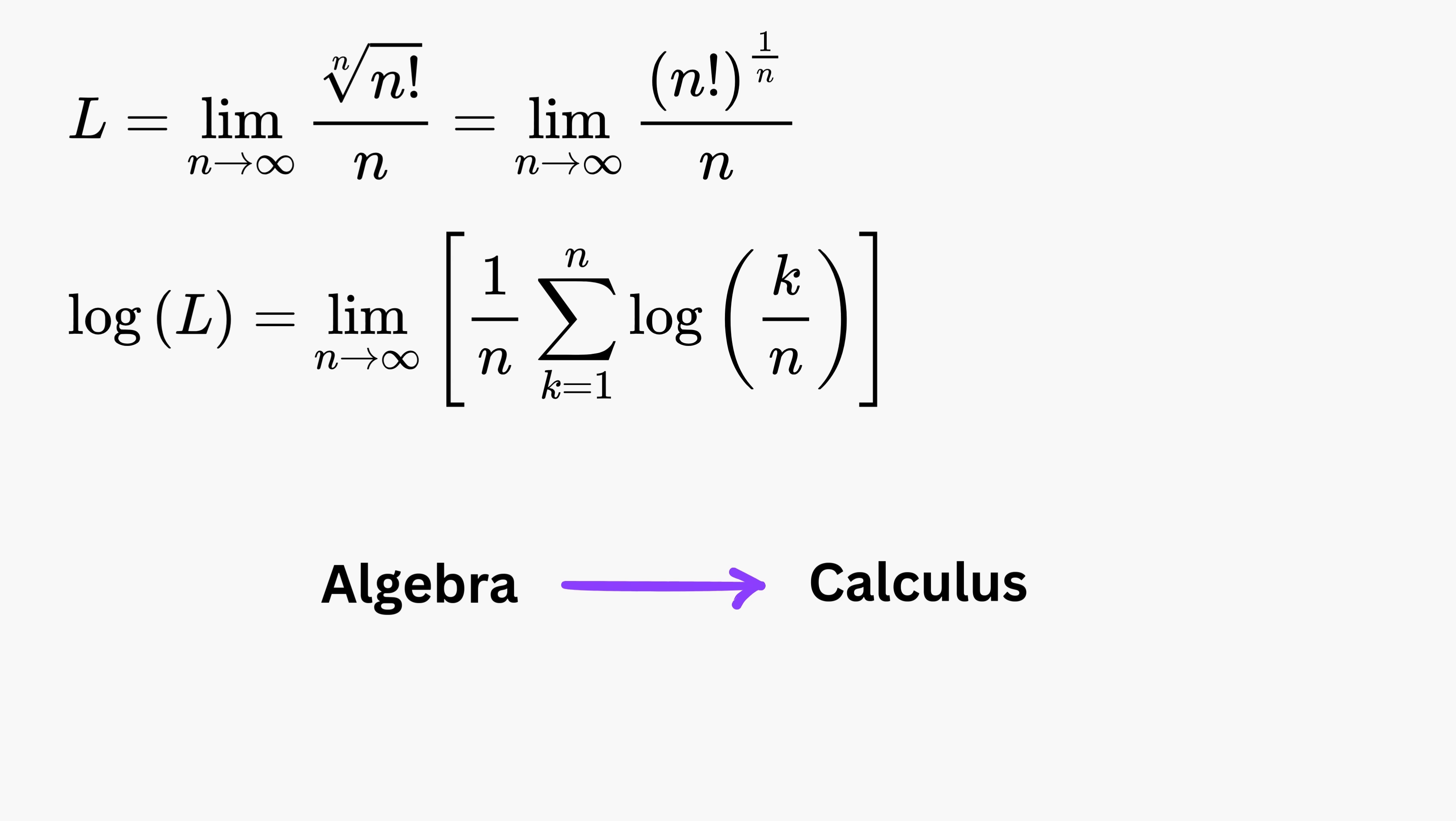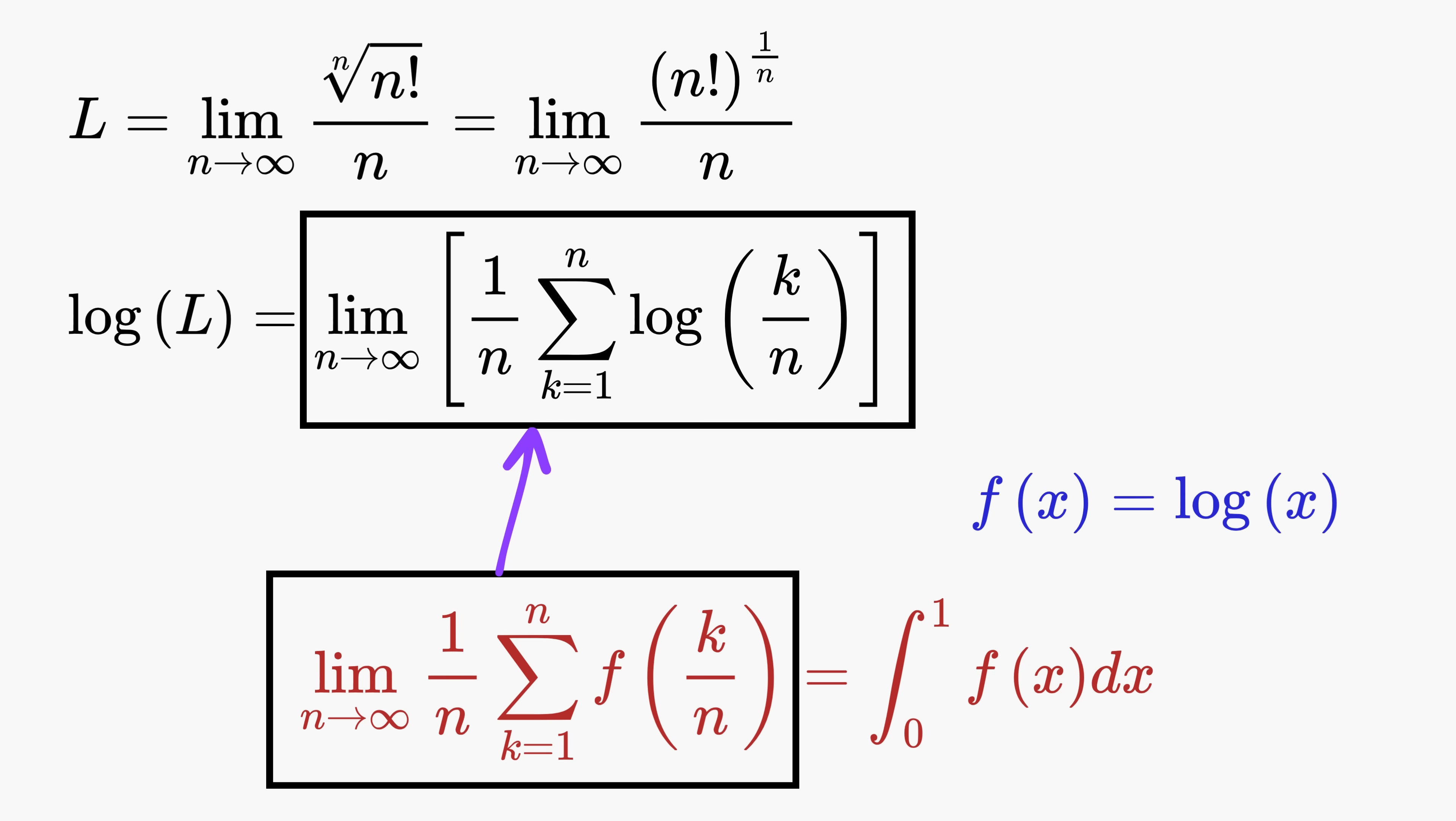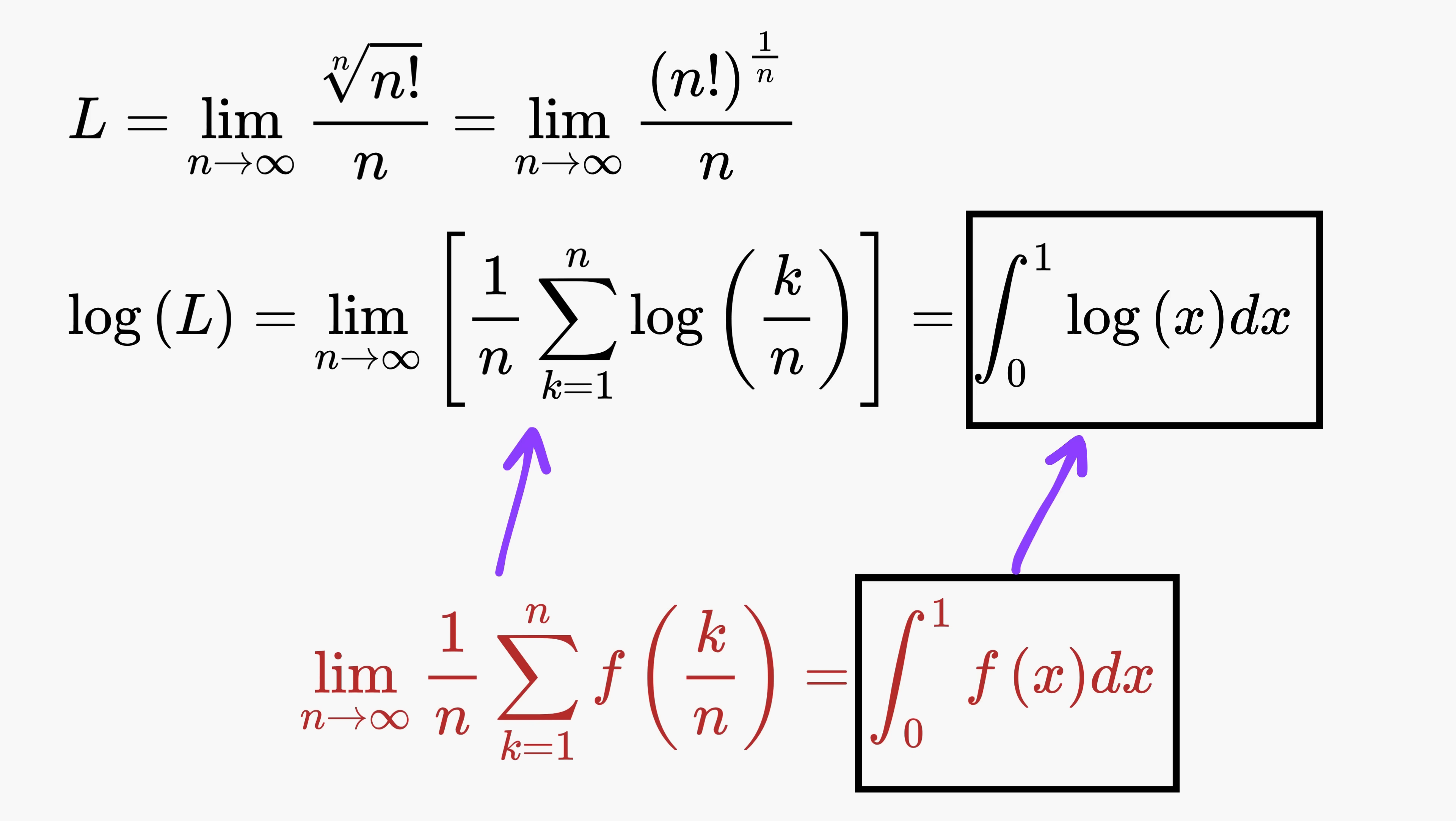Amazing! The actual fun begins here. This is the moment where algebra turns into calculus, because this looks like a Riemann sum. A Riemann sum is a special kind of sum that approximates the area under a curve and eventually becomes a definite integral as n goes to infinity. Now if the function f(x) here is the natural log of x, then the left side of this formula becomes this and the right side becomes the integral of log(x) where x goes from 0 to 1.